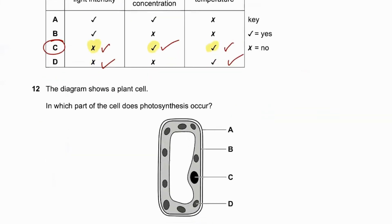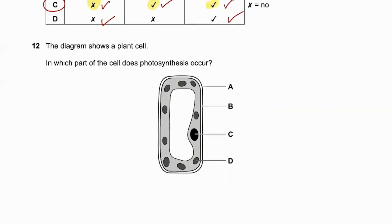Question number twelve: the diagram shows a plant cell. In which part of the cell does photosynthesis occur? Photosynthesis occurs in the chloroplast, and D is the label indicating the chloroplast — so 12D is the answer.